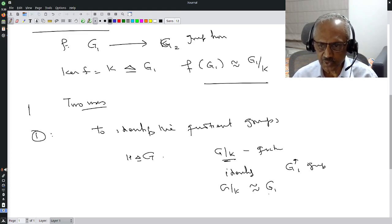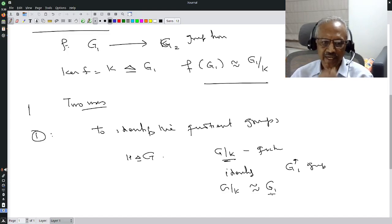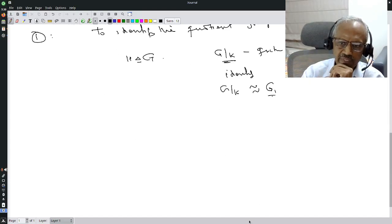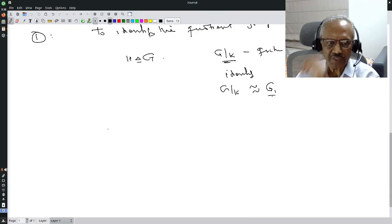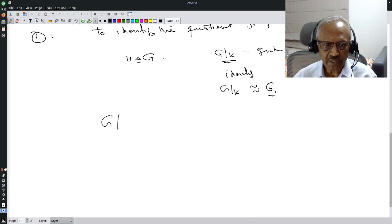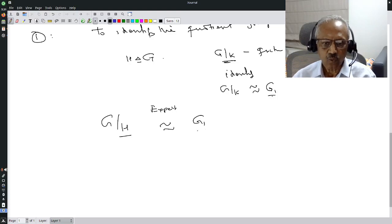G₁ is already a known group. That means we identified this. This is what it means by identification. How does it help? If I have G mod K, I have some intuitive reasons to expect this is isomorphic to G₁. This is the expectation. Why do I expect? Please read my article on quotient groups and quotient rings.